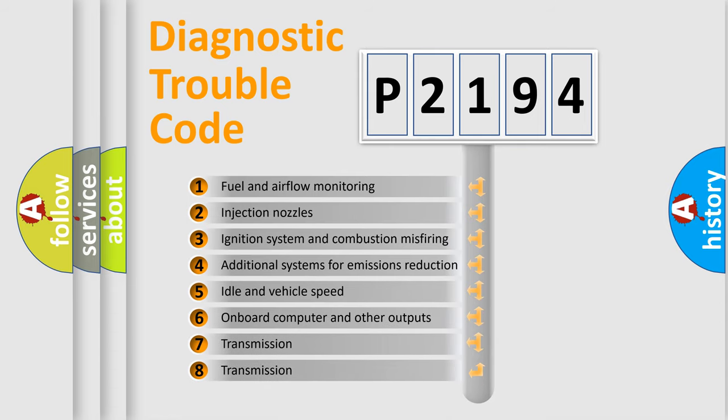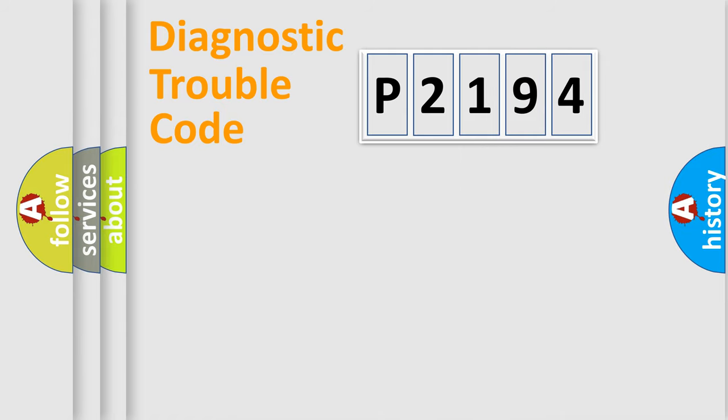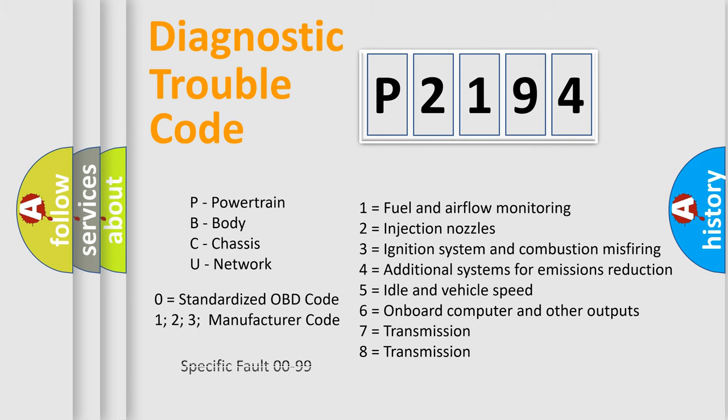The third character specifies a subset of errors. The distribution shown is valid only for the standardized DTC code. Only the last two characters define the specific fault of the group. Let's not forget that such a division is valid only if the second character code is expressed by the number zero.